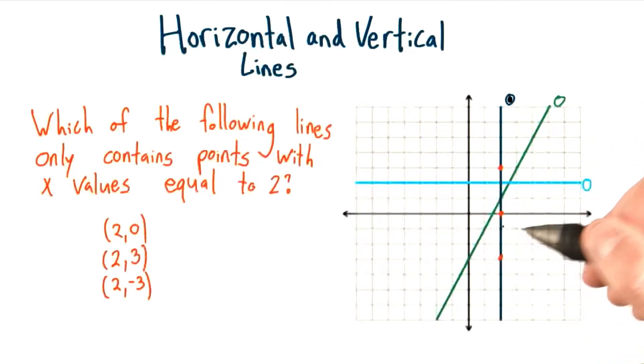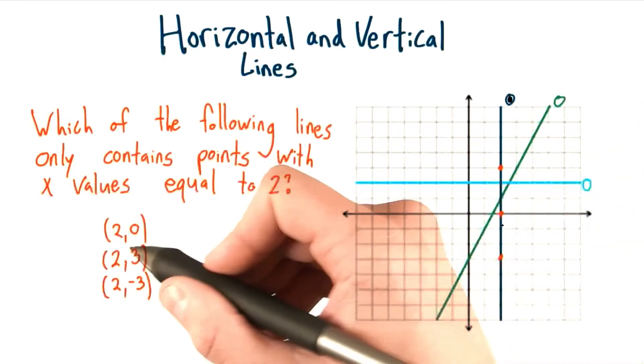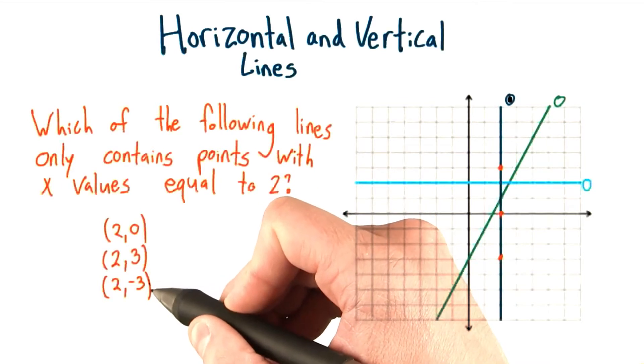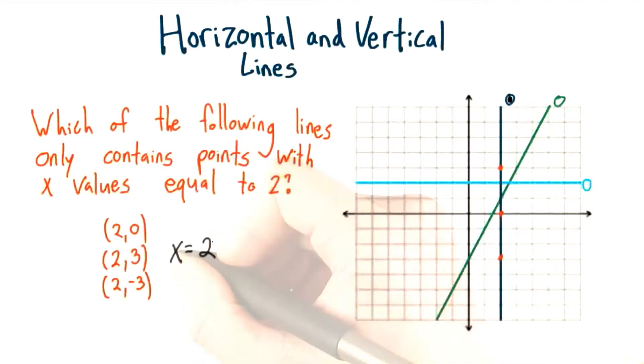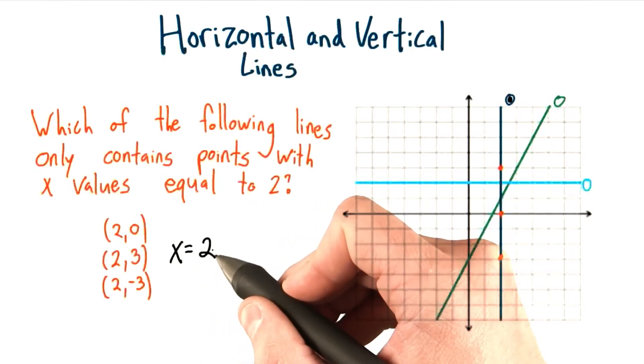So, this line is a vertical line. It only contains points, like these, whose x values are equal to 2. The way we represent this line as a linear equation is like that, x equals 2.